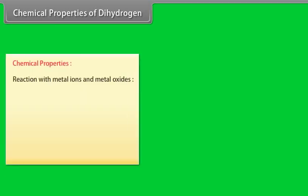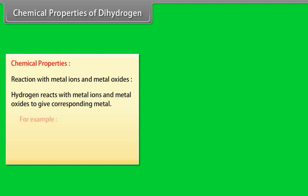Chemical properties of dihydrogen. Reaction with metal ions and metal oxides. Hydrogen reacts with metal ions and metal oxides to give corresponding metal. For example...